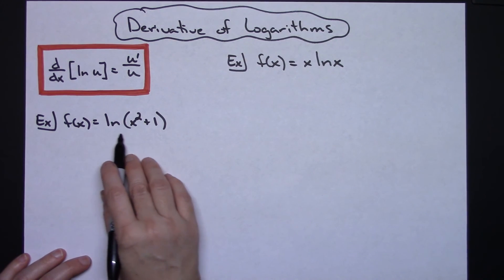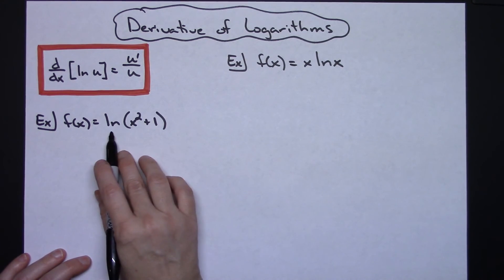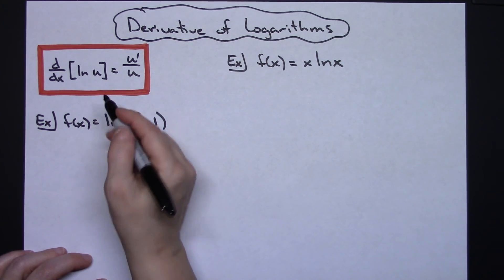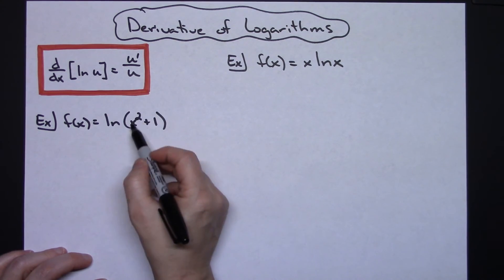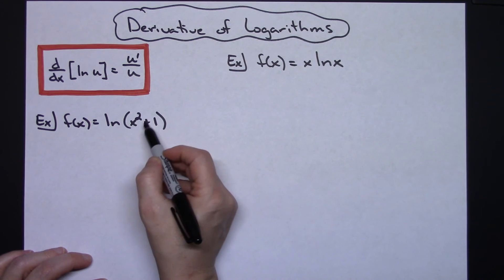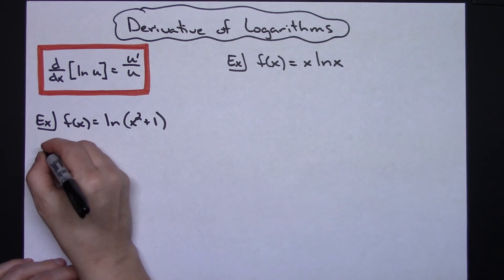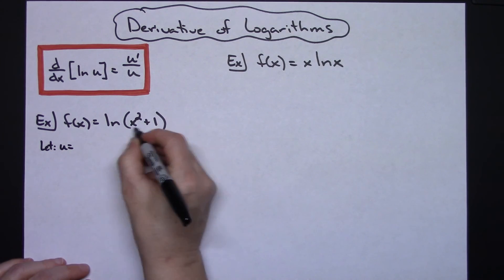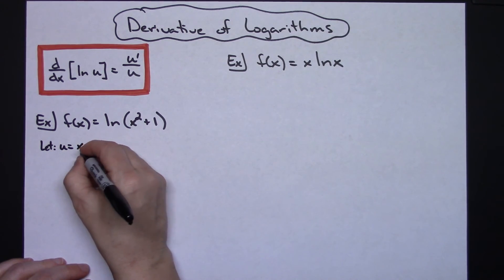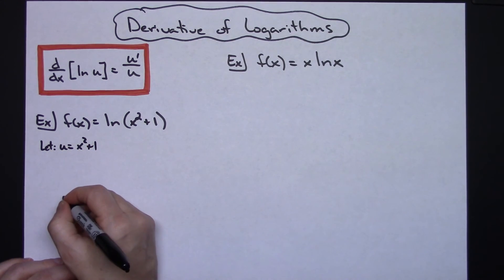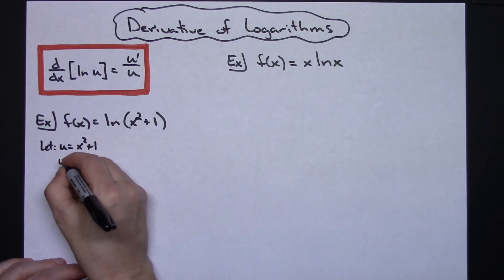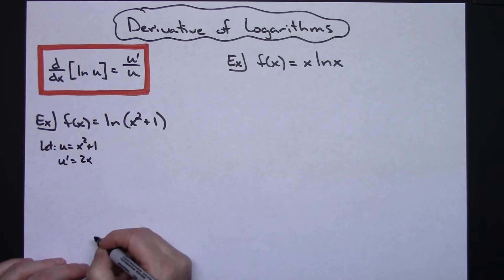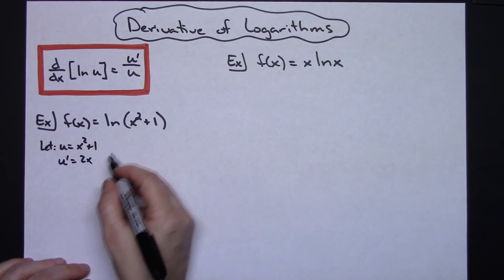Let's say our original function here is f of x equals natural log of x squared plus 1. If I let my u be the inside part of this natural log function, then I'm going to let u equal x squared plus 1. Then I can take the derivative of that, so u prime would be 2x.